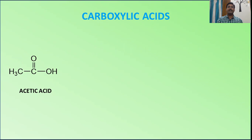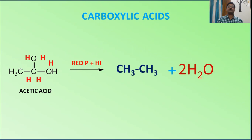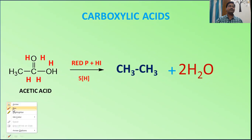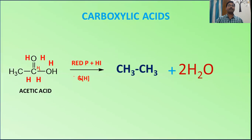For carboxylic acids — acetic acid, whose IUPAC name is ethanoic acid — when treated with our reagent, it converts into ethane. There are two oxygens, producing two water molecules. One oxygen takes two hydrogens, the other OH takes one hydrogen, and the carbon takes three hydrogens — therefore six hydrogens are required in total.